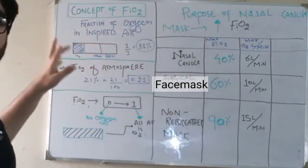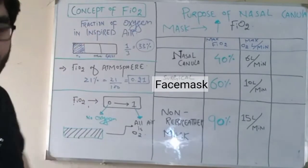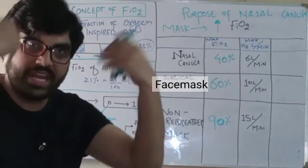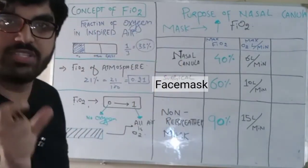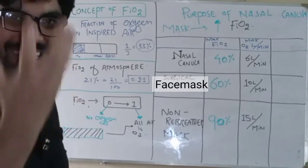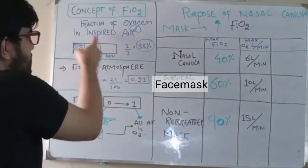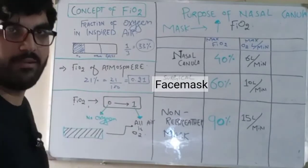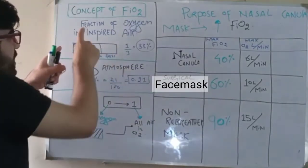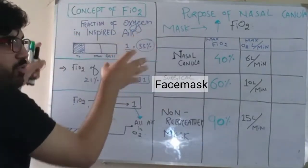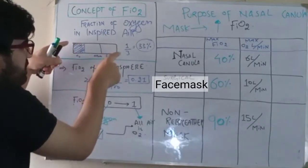The concept of FiO2 is the fraction of oxygen in inspired air. The air that we inhale, how much fraction of oxygen is in that air? Let's suppose this is the total amount of air that we inhale. So it is the fraction of oxygen in the total amount of air.